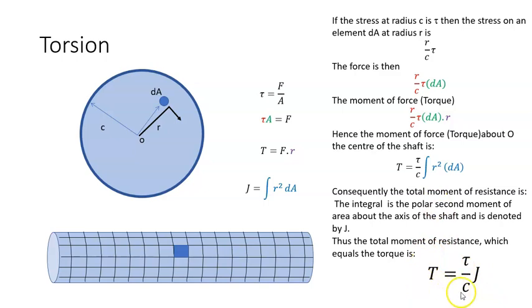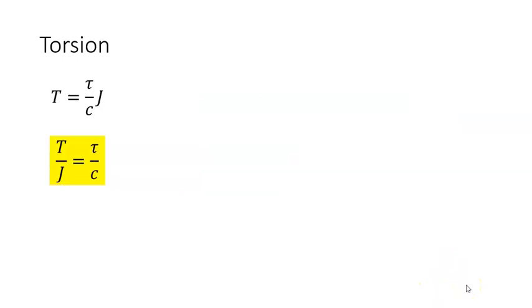And that gives me this equation. So my torque is equal to tau over c times J. That's often expressed as T over J is equal to tau over c. So that's our simple formula, and we will see how that's applied in some later videos. Thank you.